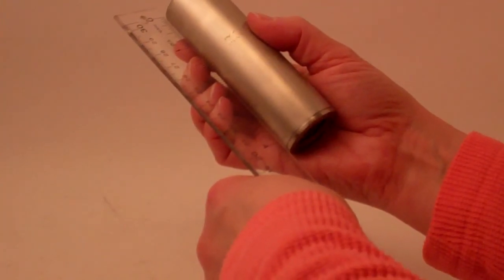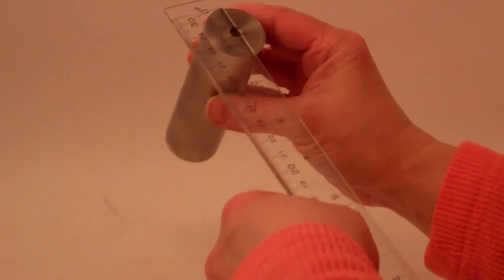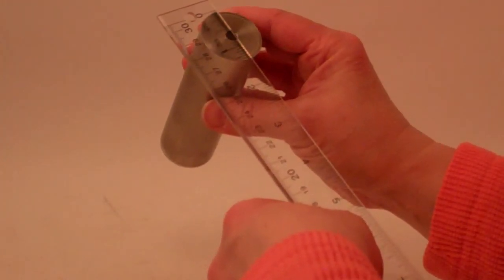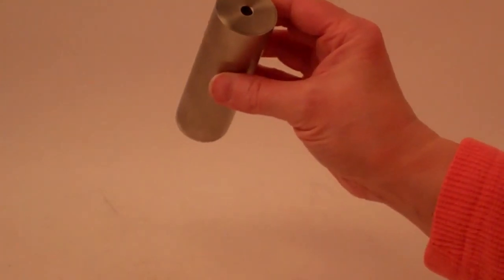Overall length, 4 and 3/8 inches, diameter across the eyepiece, 1 and 3/8 inches and the eye opening itself is a quarter of an inch.